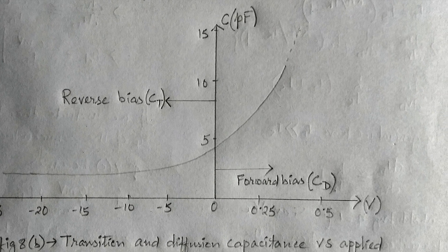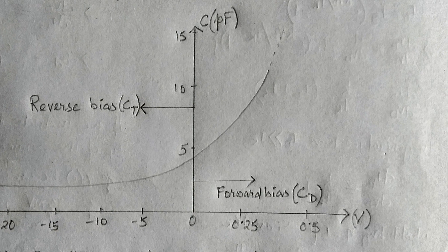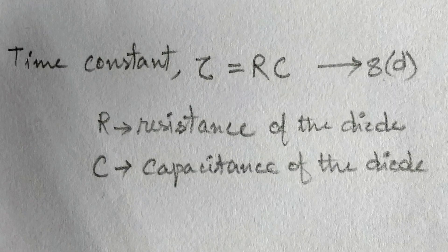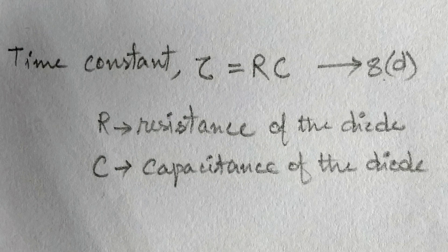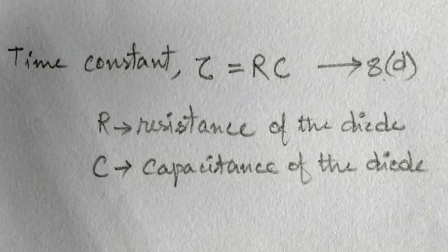This increased level of current results in reduced level of associated resistance, and the time constant, that is tau, is equal to RC, does not become excessive. This is very important in high speed applications.